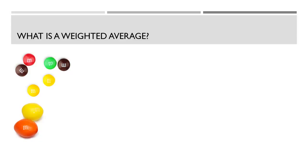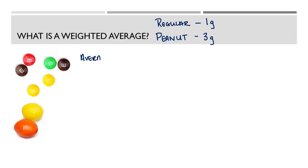First, we're going to look at what a weighted average is. Take a look at these M&Ms. Imagine that each of the regular M&Ms, the smaller ones, has a mass of 1 gram, and each of the larger peanut M&Ms has a mass of 3 grams. To figure out the average, we would take 1 plus 3 divided by 2, because we're dividing by two numbers. That is the arithmetic average.